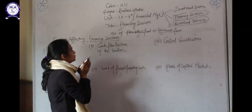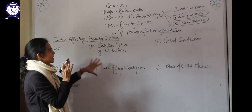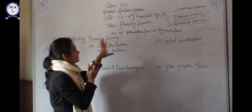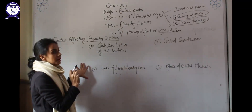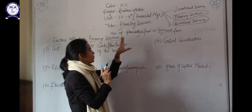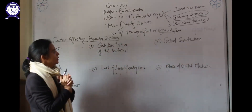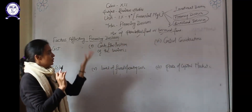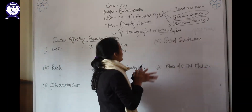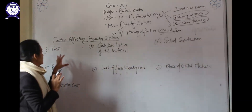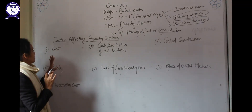It depends upon many factors. There are many factors which affect the financing decision of any company — whether a company has to arrange funds from shareholders or borrowed sources, and how much quantum to arrange from each. Let's start with the factors affecting financing decisions.